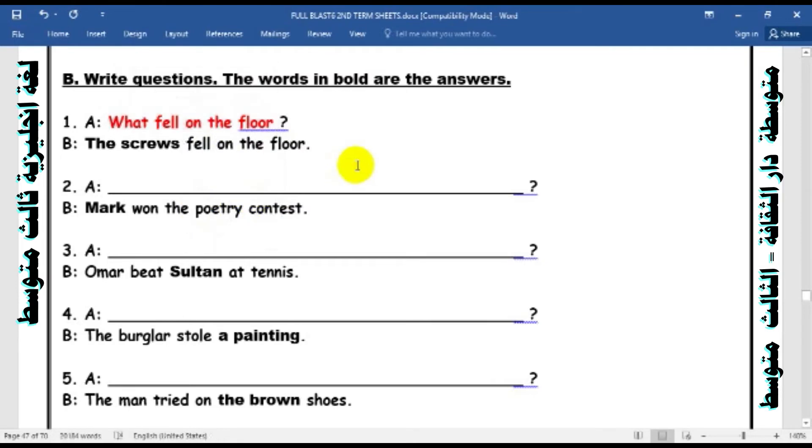Number two: Mark won the poetry contest. Who can answer? It's a subject question. We want to ask about the subject. It's so easy. No change. Don't touch the sentence. Drop the subject. Excellent. By using who. Who won the poetry contest? The poetry contest is the poetry competition. Excellent. Super excellent.